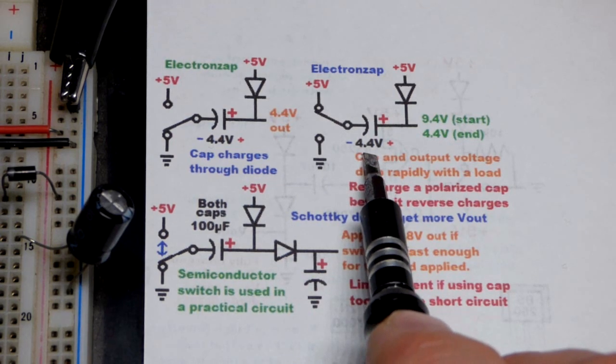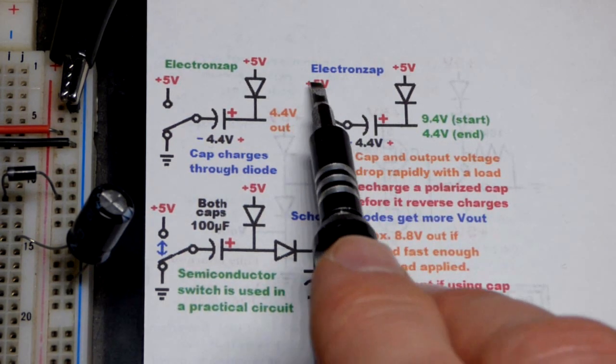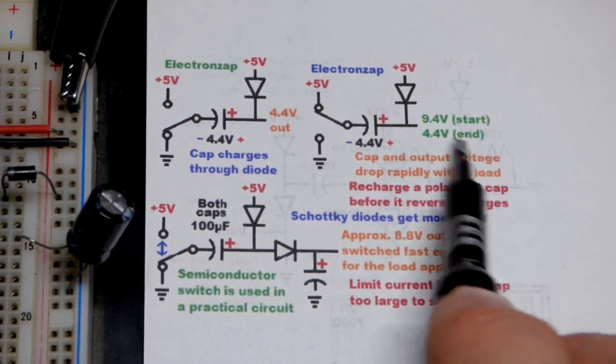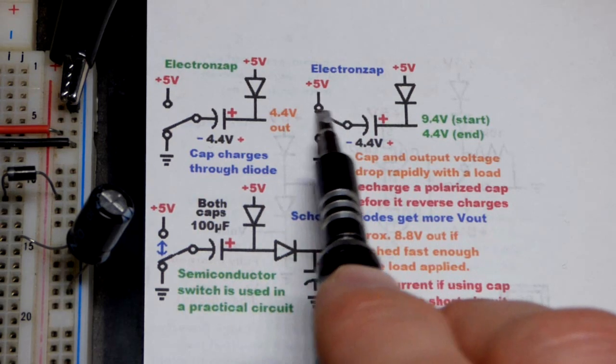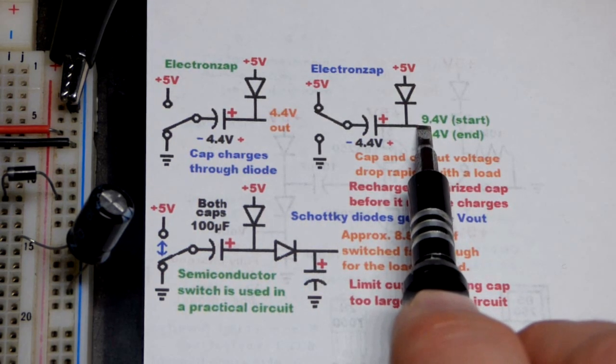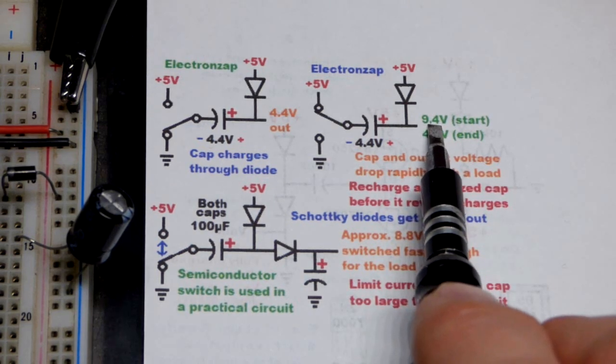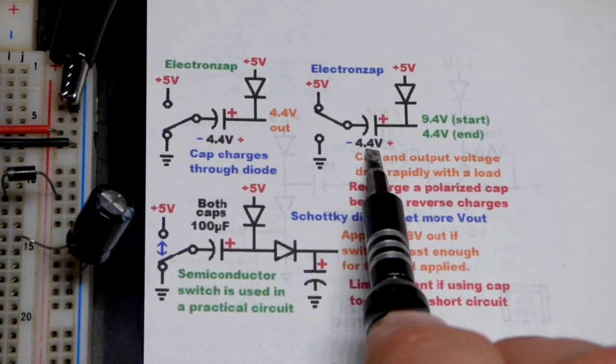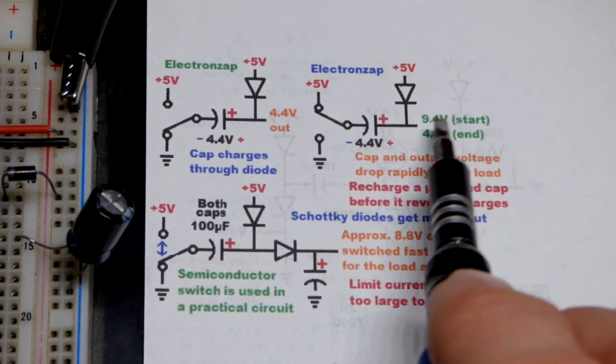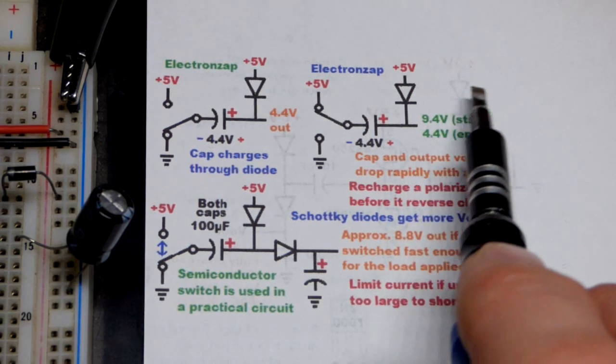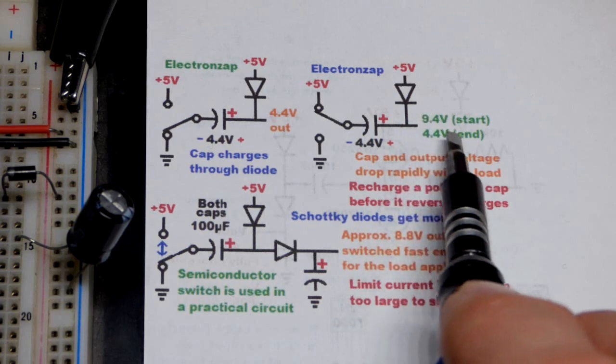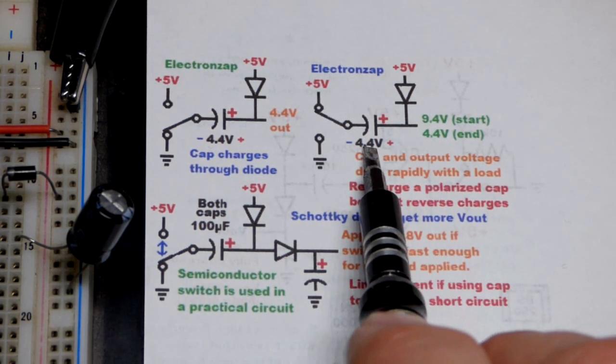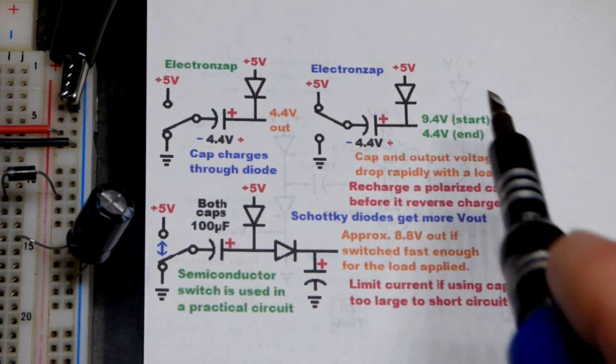We charged this up to 4.4 volts. Now when we go to the positive supply, even if we just put the multimeter probe right here with nothing connected, we would see 9.4 volts because now the power supply and the capacitor are in series. The red probe is connected here, the black probe is connected to ground, so it will see about 9.4 volts.